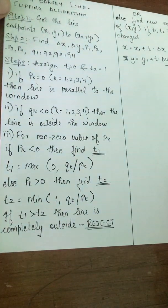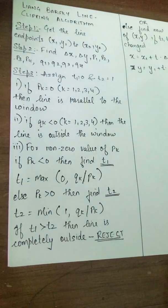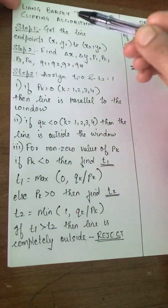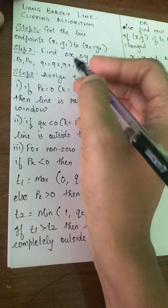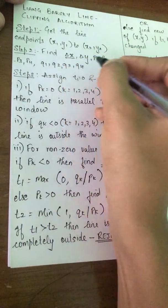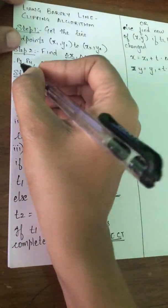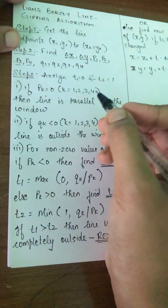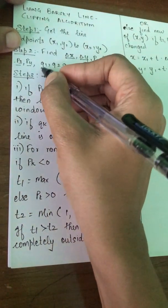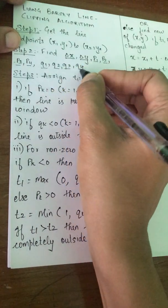Step 2: you have to find certain parameters in order to go ahead with the calculations. You have to find delta x, delta y, p1, p2, p3, p4, q1, q2, q3, and q4.